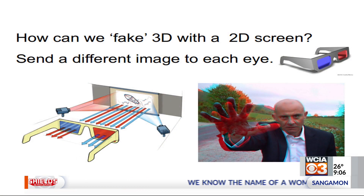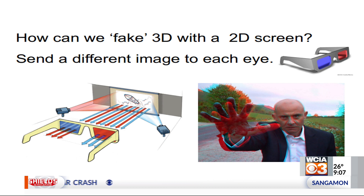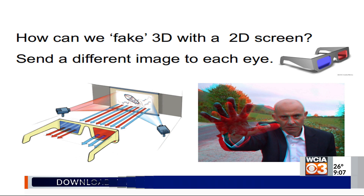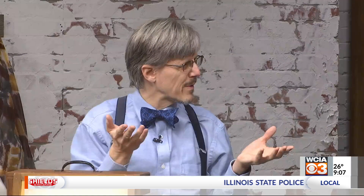The way that was originally done was actually using color. We could use, for example, a red filter on one eye and a blue filter on the other eye. Then the image on the screen had a red visual field and a blue visual field, which were different depending on how far away the object was supposed to be. The obvious problem with that is that you can't see movies in color, because you're using the color to encode distance.